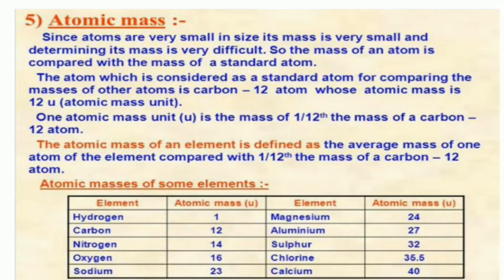The atomic mass of an element is defined as the average mass of one atom of the element compared with 1/12th the mass of a carbon-12 atom. For example: hydrogen has atomic mass 1 u, carbon is 12 u, nitrogen is 14 u, oxygen is 16 u, sodium is 23 u, magnesium is 24 u, aluminium is 27 u, sulfur is 32 u, chlorine is 35.5 u, and calcium is 40 u.